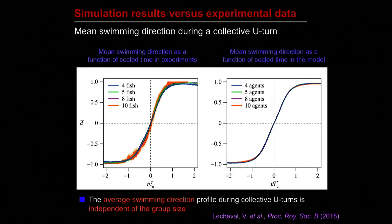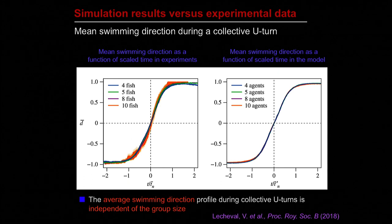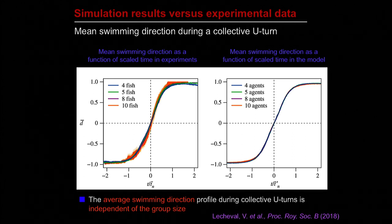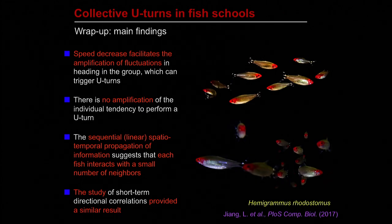Despite having only two free parameters in our model — J and epsilon — with a fixed topological configuration and only nearest-neighbor interactions, the model is able to reproduce quite well the chains of turning decisions and also the main features of the experimental dynamics.